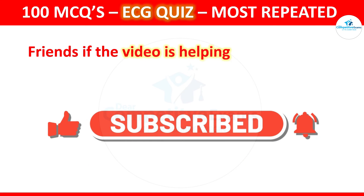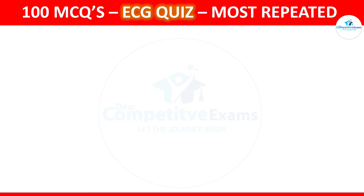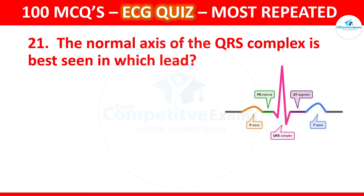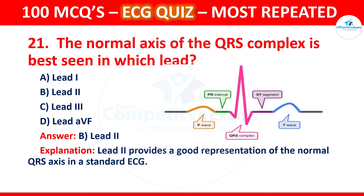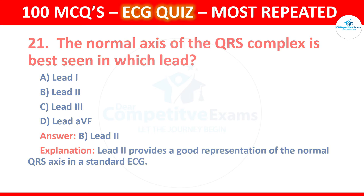Question 21: The normal axis of the QRS complex is best seen in which lead? Options are Lead 1, Lead 2, Lead 3, and Lead AVF. The correct answer is Lead 2. Lead 2 provides a good representation of the normal QRS axis in a standard ECG.